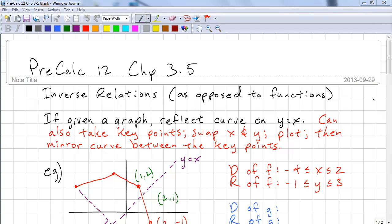And this last transformation is reflecting on the line y is equal to x. So one way to graph the inverse relation is to take the key points and swap the x and y and plot them. Then we just mirror the curve between the key points.